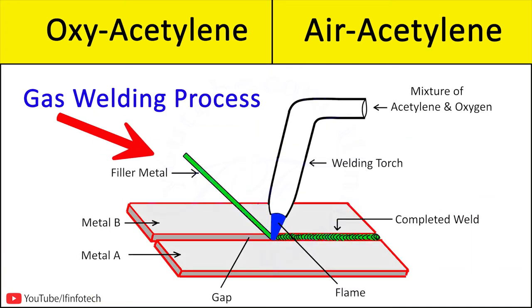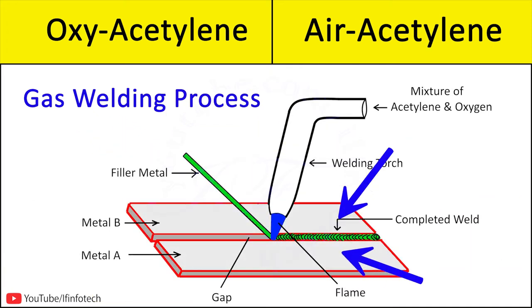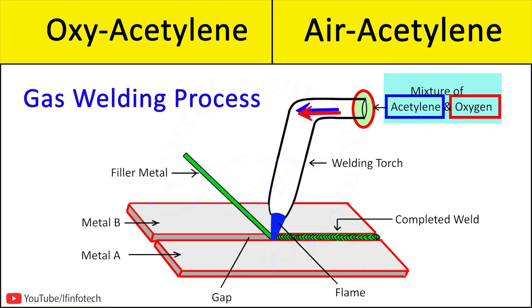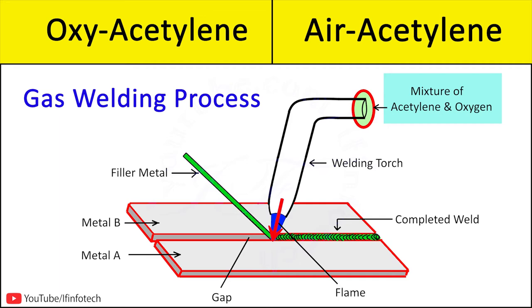In the gas welding process, metal parts are welded using different gases with oxygen. The gas cylinder and oxygen cylinder are connected to a welding torch through a pressure regulator, which regulates the pressure of gas and oxygen supplied to the torch where they are properly mixed. The flame is ignited by a striker and controlled through valves situated in the welding torch.